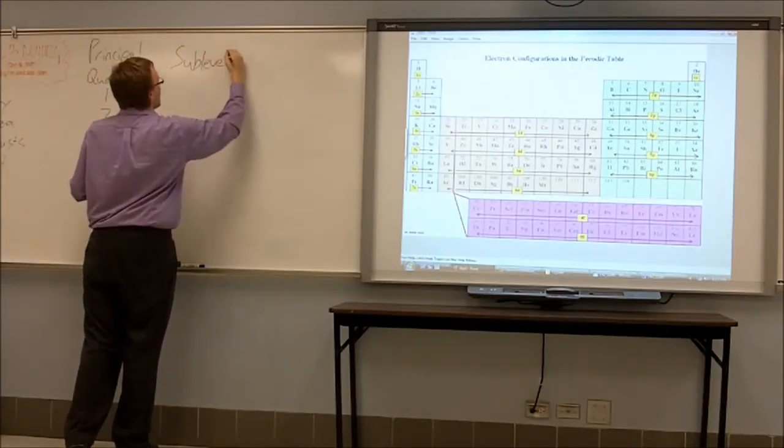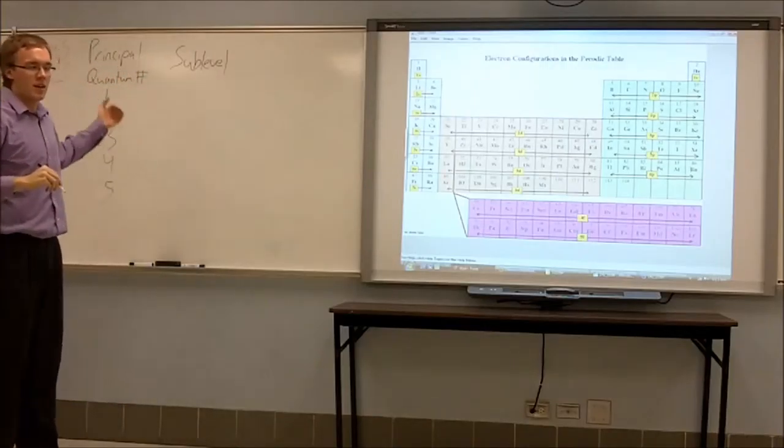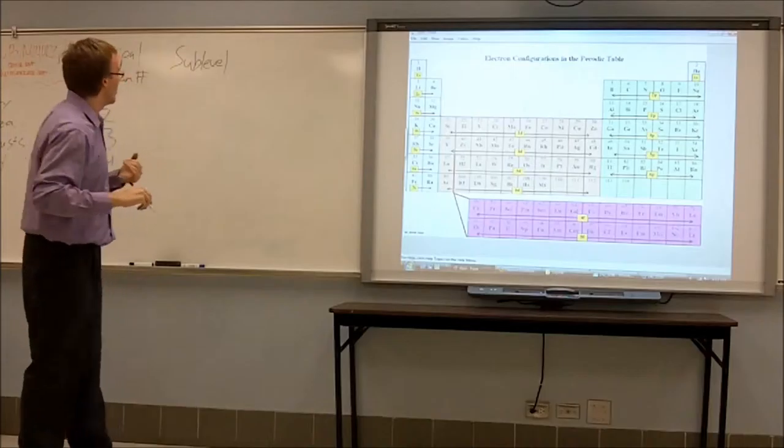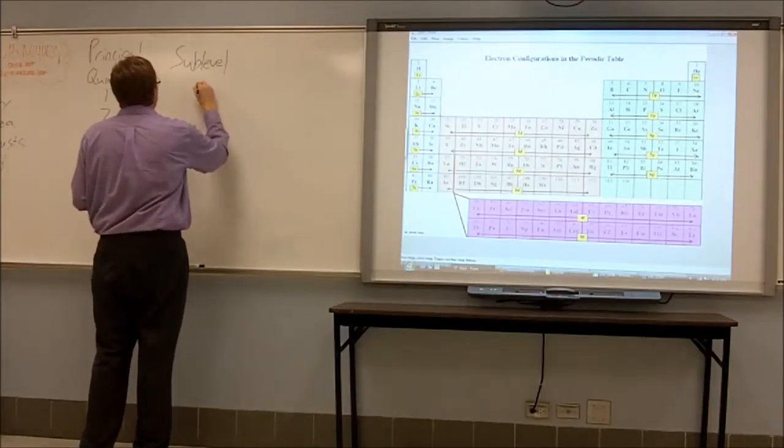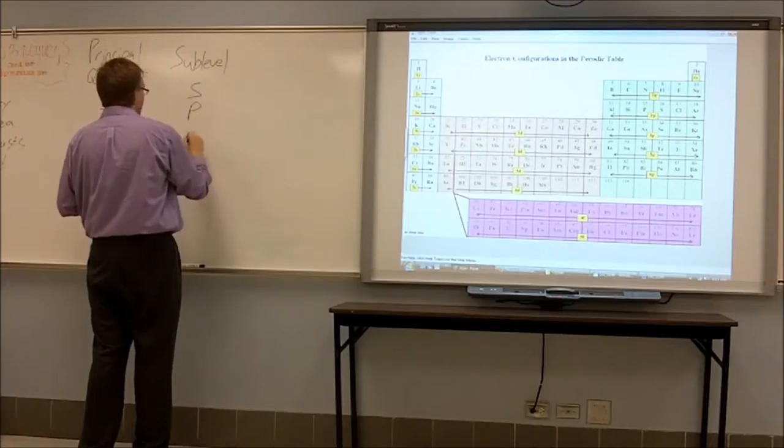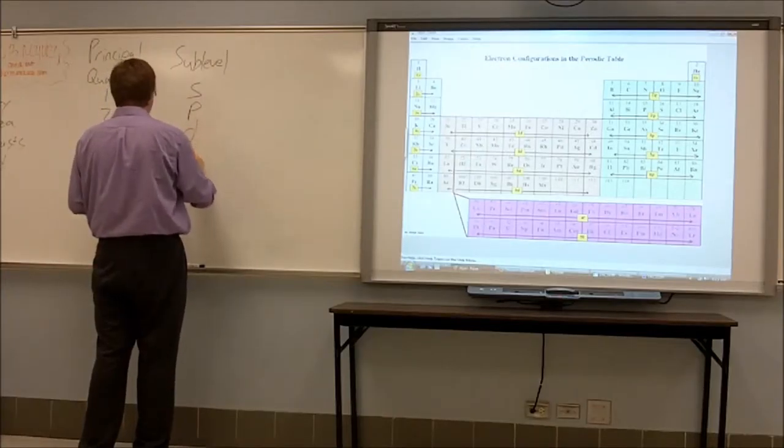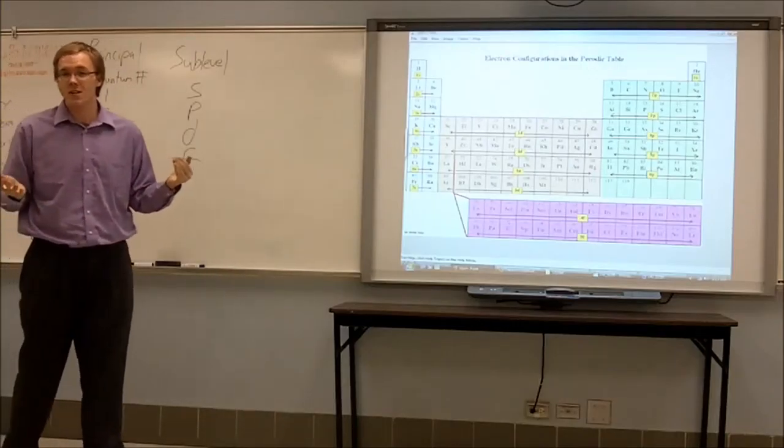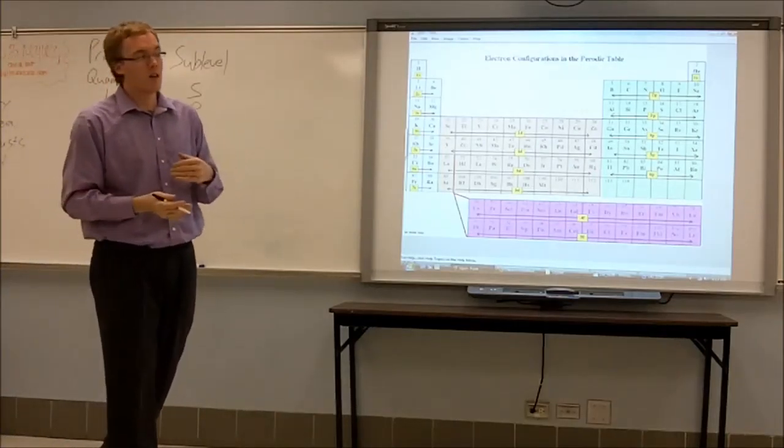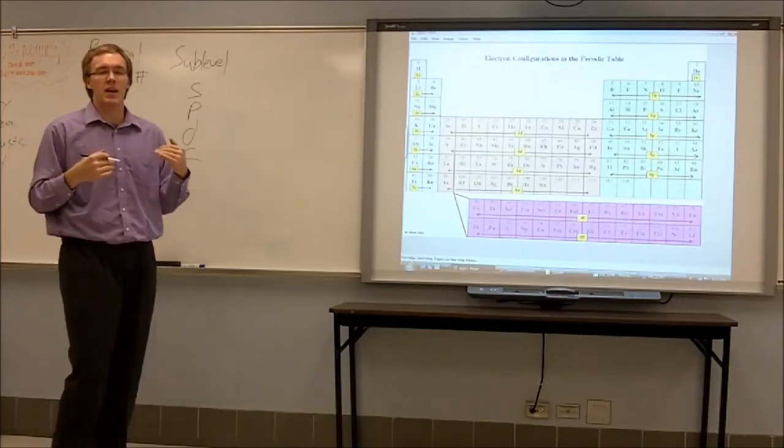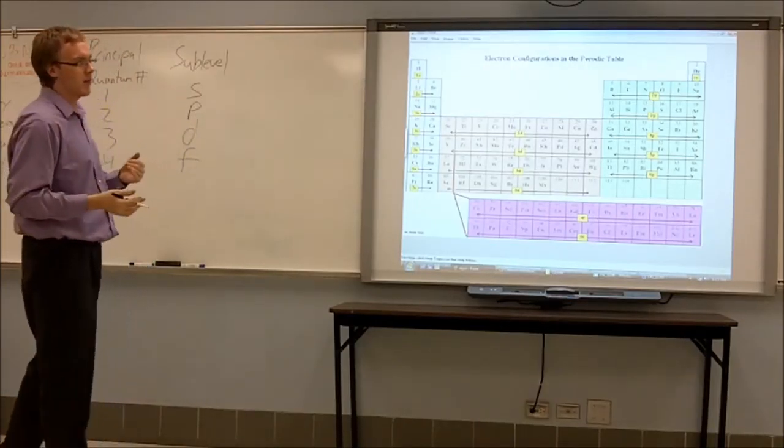Right? So for the second part about electron configuration, the little terminology that we're going to use is called the sublevel. And unfortunately the sublevel doesn't go in numbers. The sublevel uses letters. So the first sublevel is S, the second is P, the third is D, and the fourth is F.